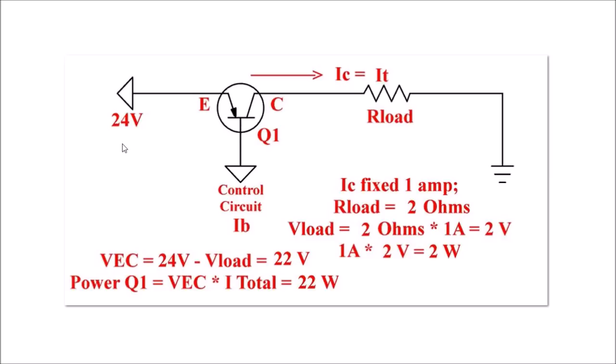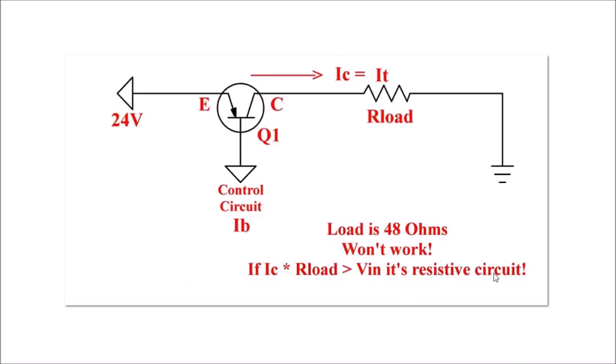One last issue we must address is what happens if I try to current regulate a load whose resistance is so high that the voltage really comes out higher than the voltage VIN? It won't work. If we try to set it for 1 amp and the load is 48 ohms, well, 1 amp times 48 ohms is 48 volts. You will get no current regulation. It's just a resistive circuit and not a very good one at that.